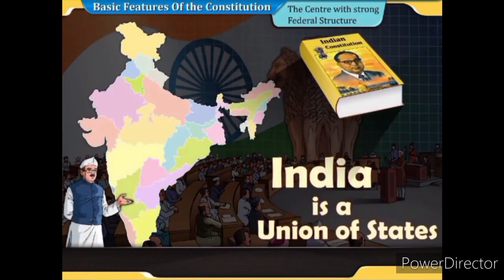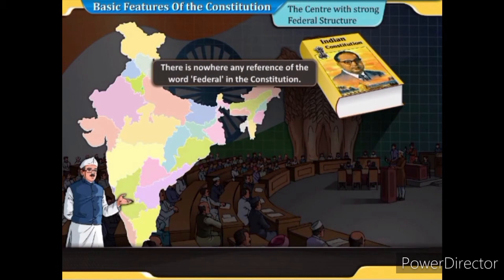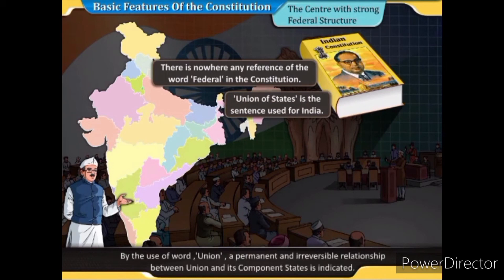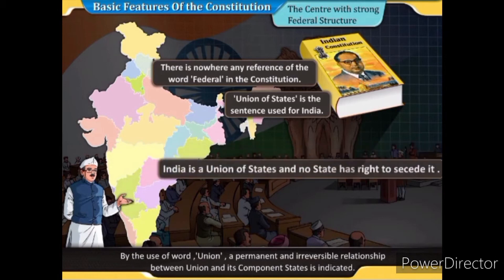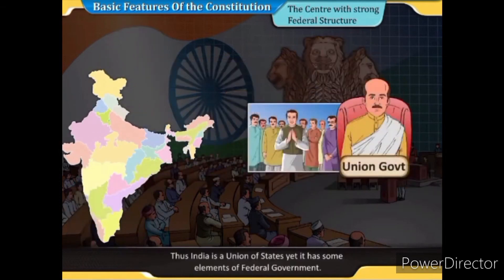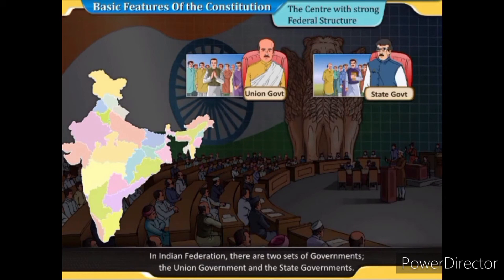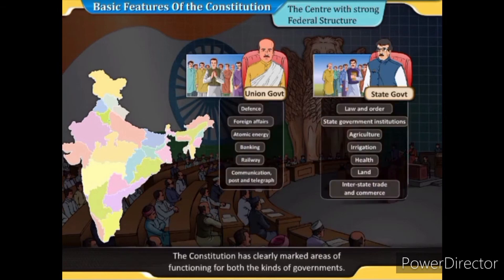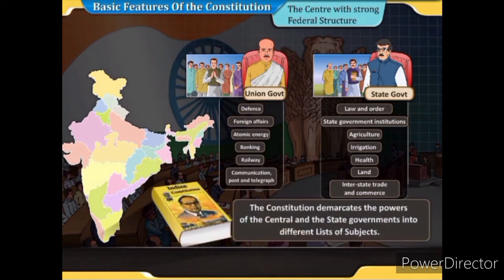India is a union of states; there is no reference to the word 'federal' in the Constitution. The word 'union' indicates a permanent and irreversible relationship between the union and its component states. No state has the right to secede, yet India has some elements of federal government. In the Indian federation there are two sets of governments — the union government and the state governments — and the Constitution clearly marks areas of functioning and demarcates powers into different lists.